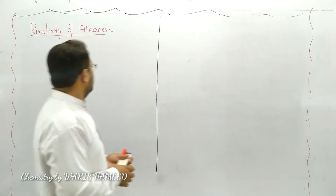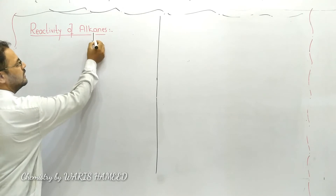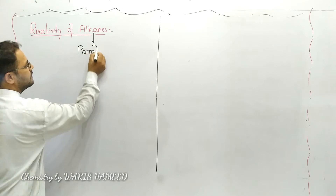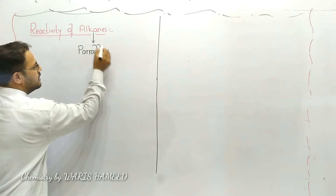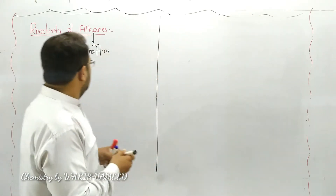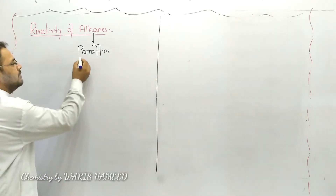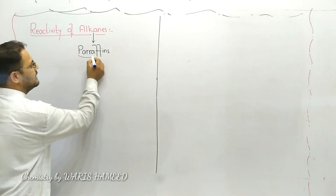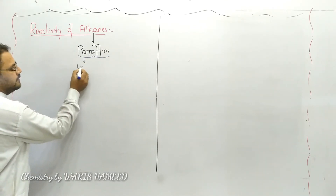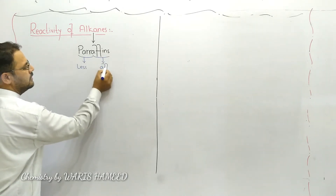First of all, alkanes are also known as paraffins. The question is: why are alkanes known as paraffins? The term 'paraffins' is derived from two words — 'para' meaning less, and 'affins' meaning affinity.